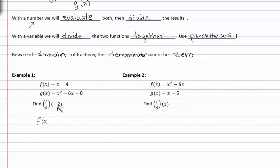f of x over g of x, where f of x is f of negative two, which we know to be negative two minus four or negative six. In the denominator, we have g of negative two, which is equal to negative two squared minus six times negative two plus eight, which equals positive twenty-four.